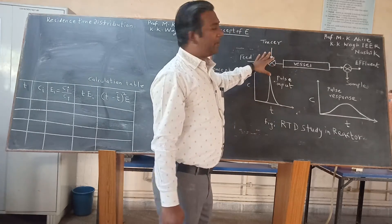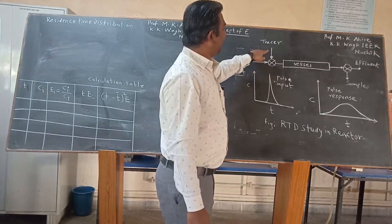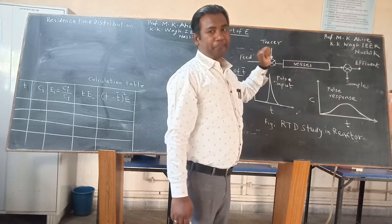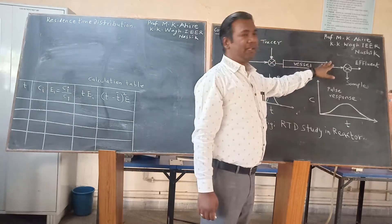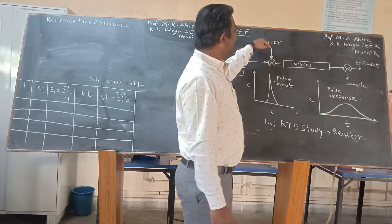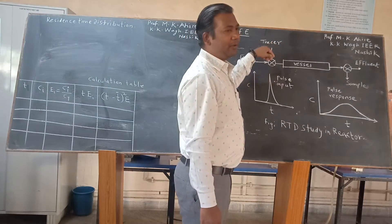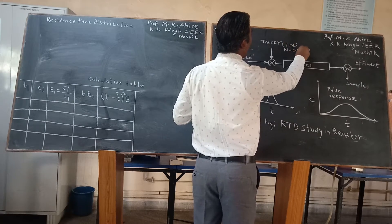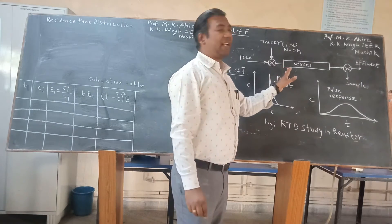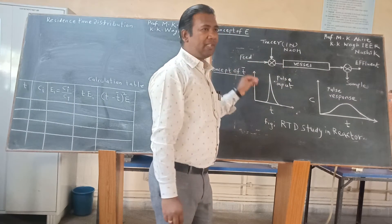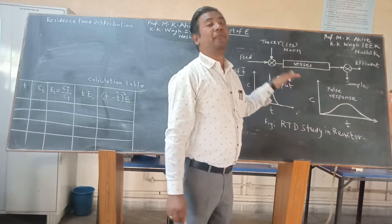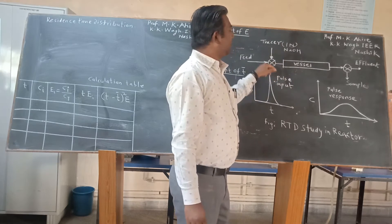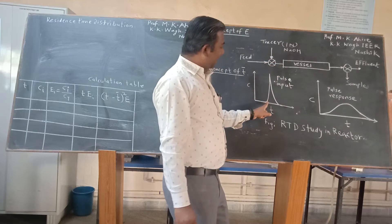So what experiment are we conducting to determine that? We allow water to pass through the vessel. First the vessel will fill completely, and then we inject the tracer material. In our laboratory we use one normal NaOH as a tracer material. The tracer material is used to trace the path of fluid flowing through the reactor. This tracer material is injected in a single shot.